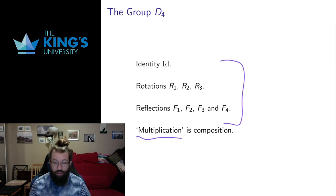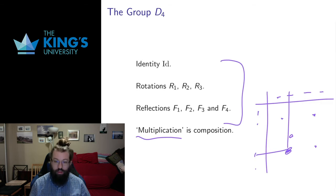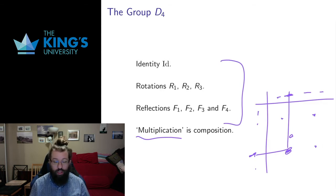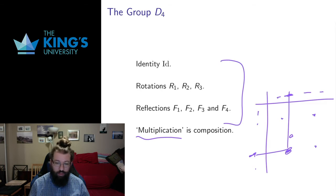So I have eight elements and a multiplication, and I want to understand the structure. One way to do that is to draw a multiplication table — the elements of the group along each axis, and in each cell the result of composing those two elements, much like multiplication tables for numbers in elementary school. Here I have a new multiplication and I want to see what it's like. For the rest of this video I'll develop a multiplication table for D4 as a demonstration of its structure.